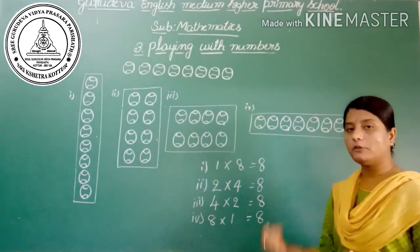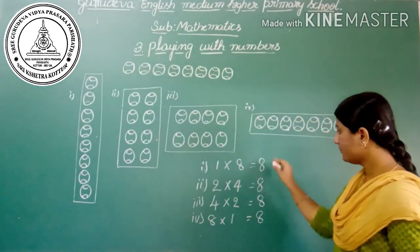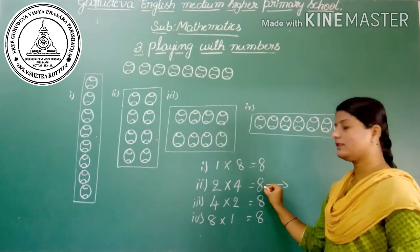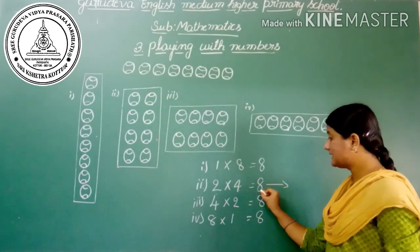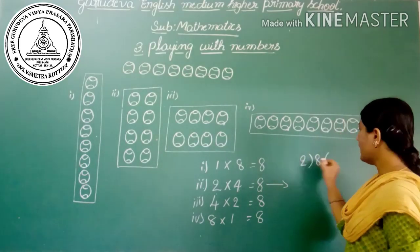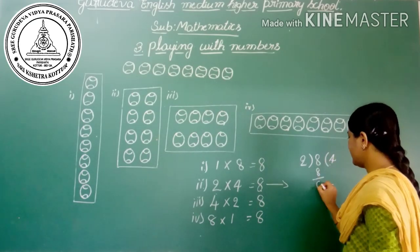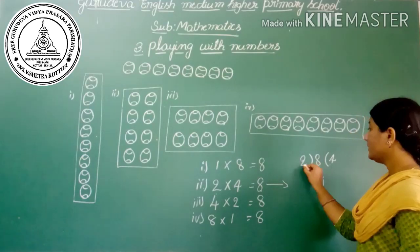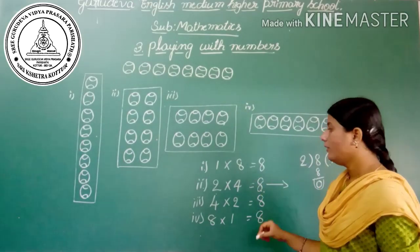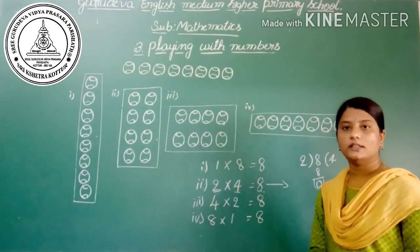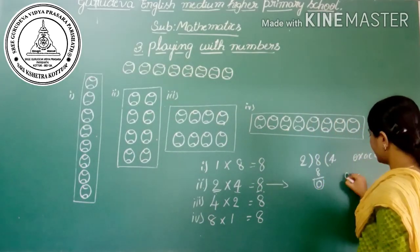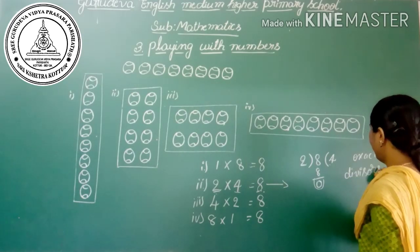Is there any possible way to arrange them in a different pattern? No, it is not possible. From these calculations, we can observe that 2 and 4: 2 into 4 is equal to 8. So 2 and 4 exactly divide 8 — the remainder is 0. So 2 and 4 are the exact divisors of 8.